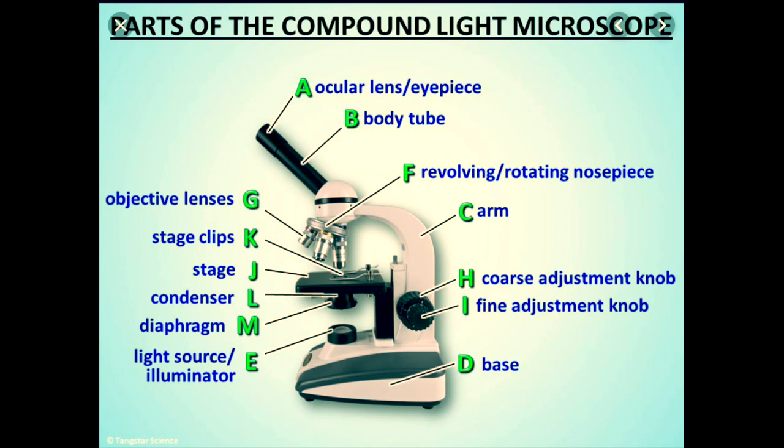In which we have the ocular lens or the eyepiece on top, below which is the body tube and then there is the revolving rotating nose piece on which are attached the objective lenses. Beneath this is the fixed stage which has the fixed stage clips and the mechanical stage. Below this is the condenser along with the iris diaphragm and then comes the light source or illuminator.